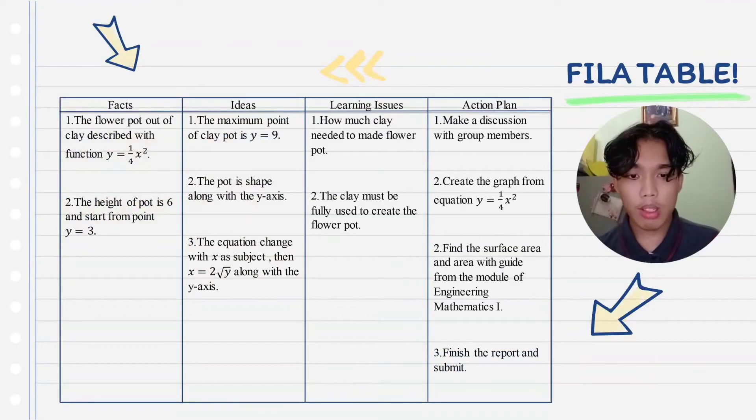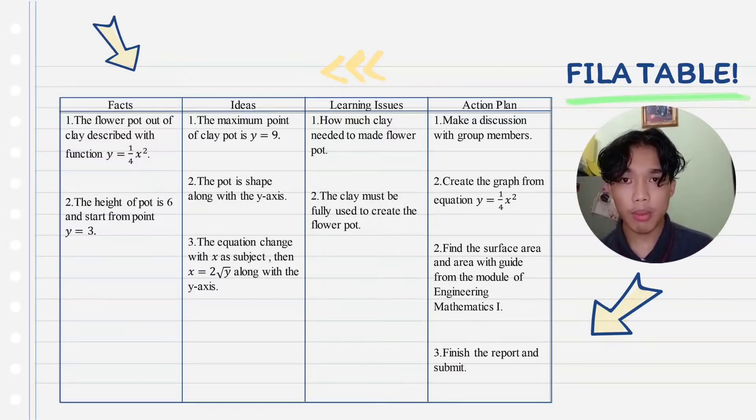Assalamualaikum, my name is Daniel Hisham and my matrix number is A812947. Thank you to my friend for explaining the problem statement. Now, I'm going to share with you guys the fillable.